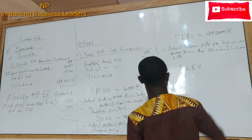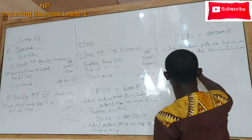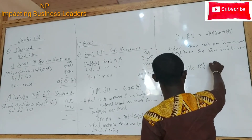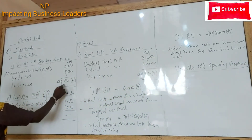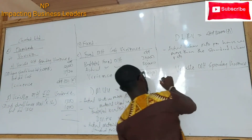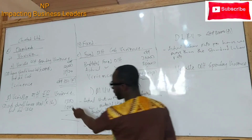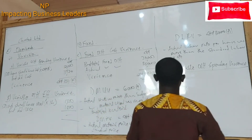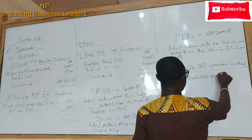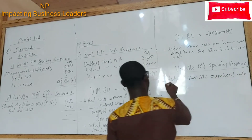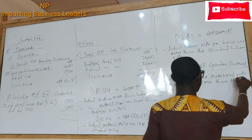Direct labor efficiency variance — we didn't get any variance, so we wouldn't do anything for it. Then variable overhead spending variance, or expenditure variance, was favorable. Why? Because it's about payment, and it means we are paying less than what we are supposed to pay. Since the hours are the same, the only reason could be the payment — meaning the actual variable overhead rate per hour was less than the standard rate.